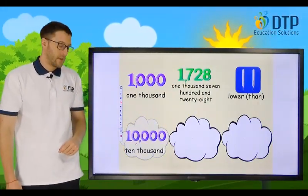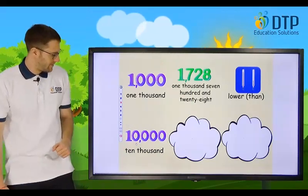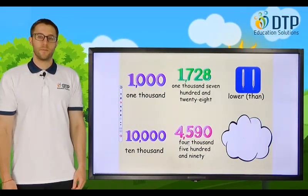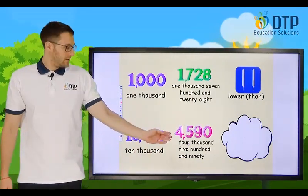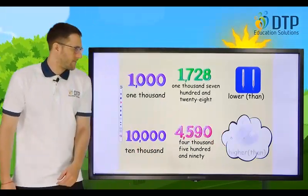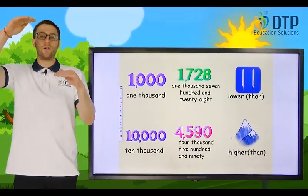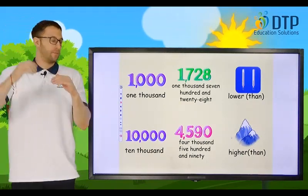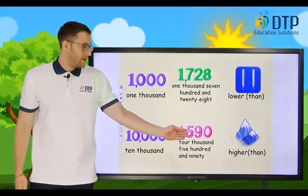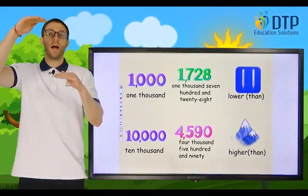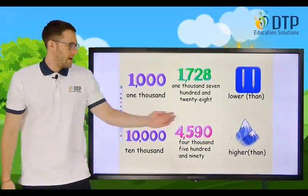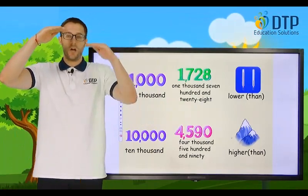Ten thousand. Ten thousand. Four thousand five hundred and ninety. Four thousand five hundred and ninety. Higher than. Higher than. This time we can say four thousand five hundred and ninety is higher than one thousand. Higher than, lower than.